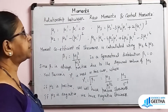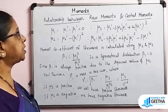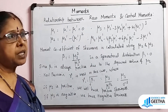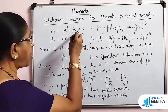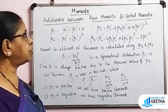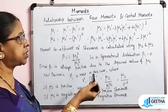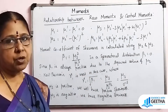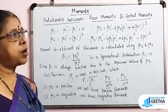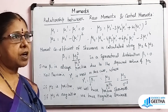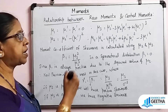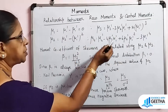Now let's look at the relationship between raw moments and central moments. If we calculate the raw moments first, we can convert them to central moments using the mean. Knowing both the raw moments and the central moments allows us to analyze the distribution fully.